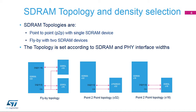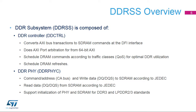LPDDR2 or LPDDR3 devices are mostly available with a 32-bit data bus width, while DDR3 or DDR3L devices are mostly available with a 16-bit data bus width. The DDR subsystem, or DDRSS, is composed of two main parts: the DDR controller, or DDRCTRL, and the DDRPHY, or DDRPHYC.